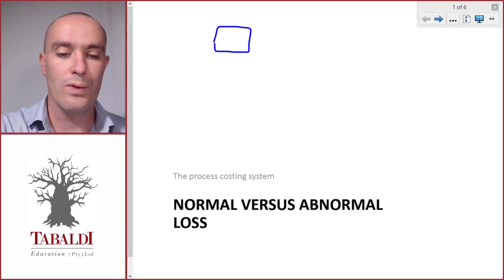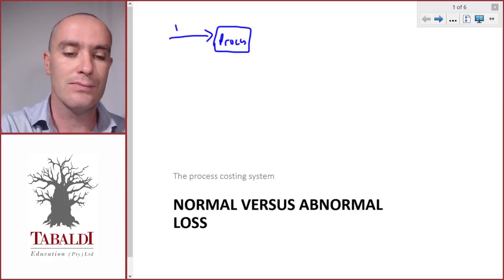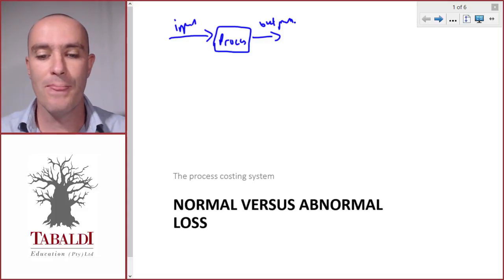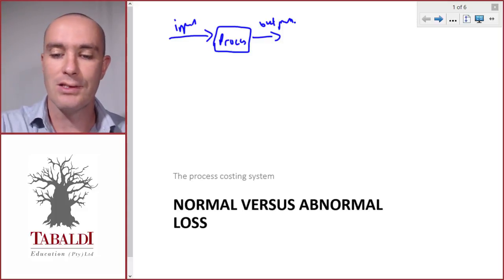In a perfect world, in a manufacturing process, all the inputs will somehow be reflected in the outputs. Nothing will go missing in between.